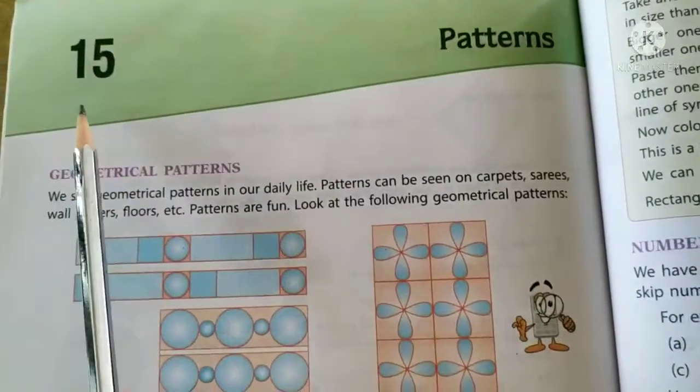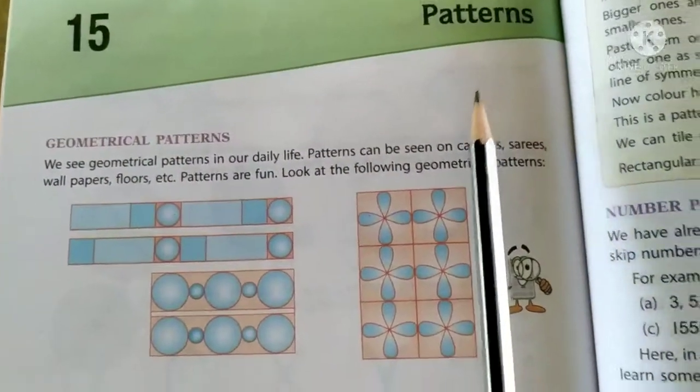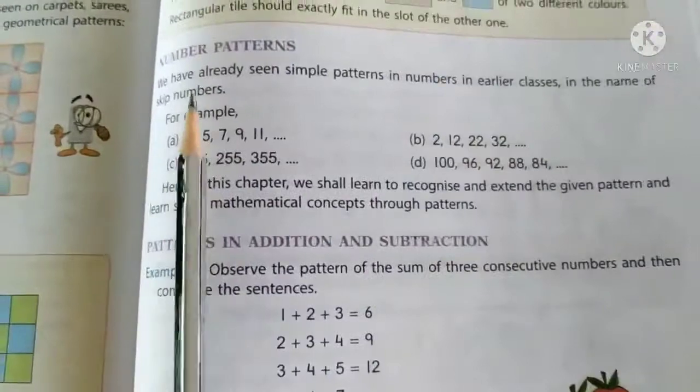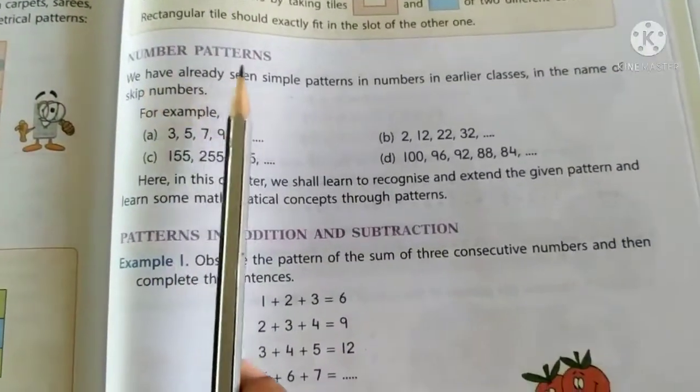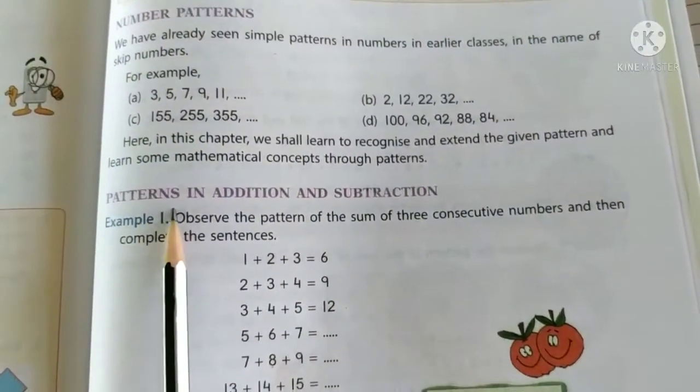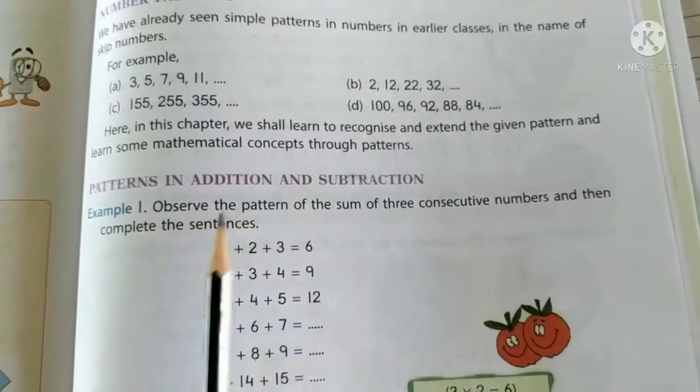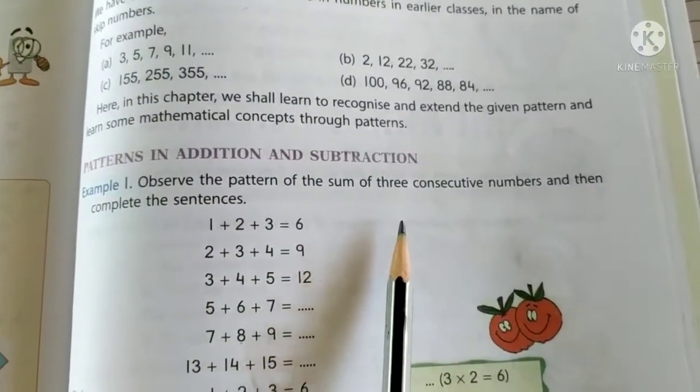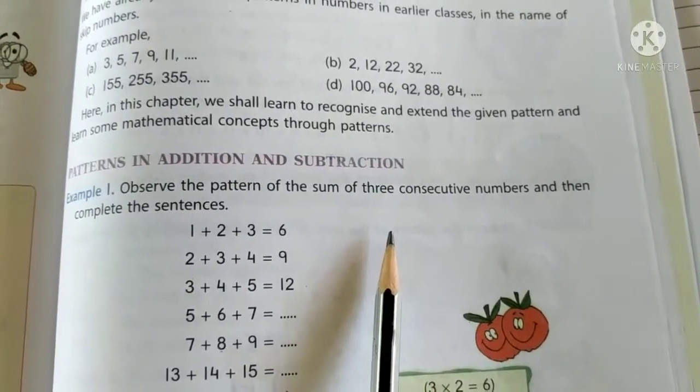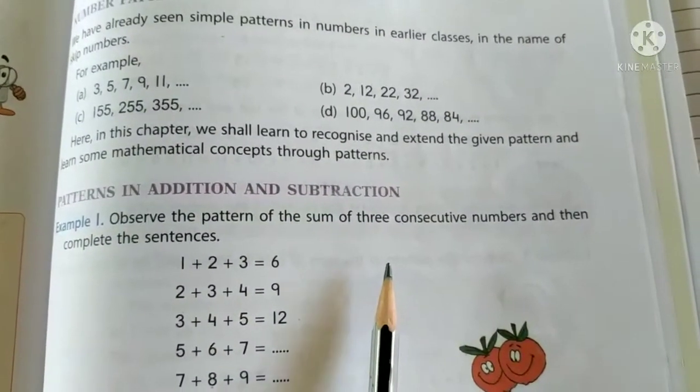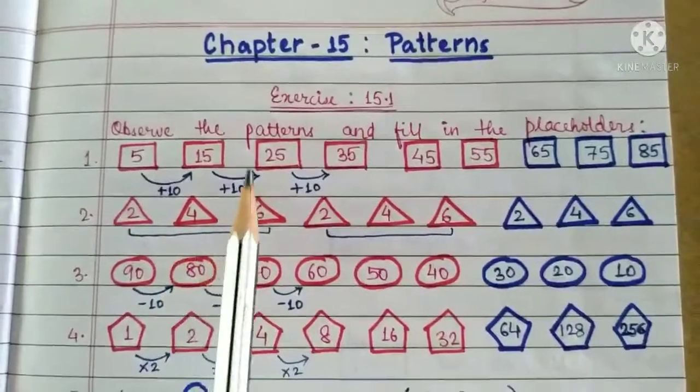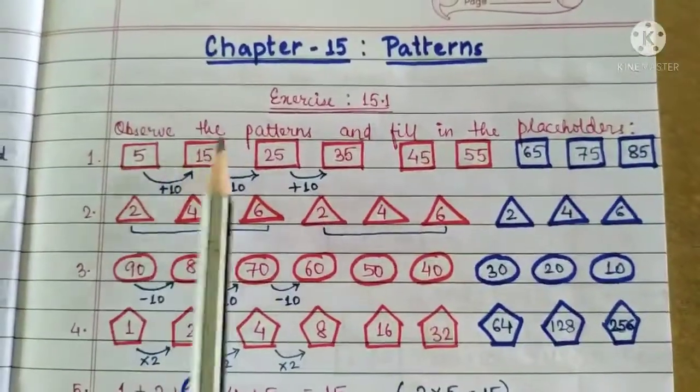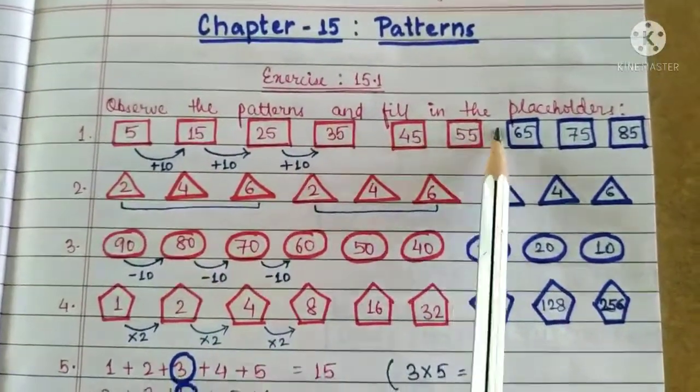Dear students, in chapter 15, Patterns, we have learned that patterns are also found in numbers. Patterns can be obtained by adding and subtracting the given number in any order. So on the basis of this knowledge, we will solve exercise 15.1. The question is, observe the patterns and fill in the placeholders.